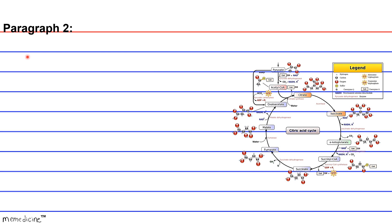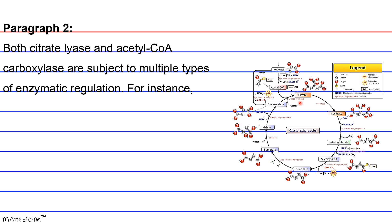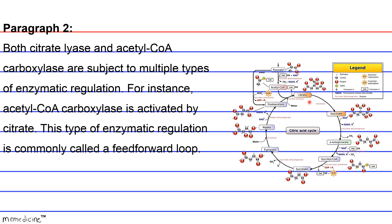Paragraph 2: Both citrate lyase and acetyl-CoA carboxylase are subject to multiple types of enzymatic regulation. For instance, acetyl-CoA carboxylase is activated by citrate. This type of enzymatic regulation is commonly called a feed-forward loop.